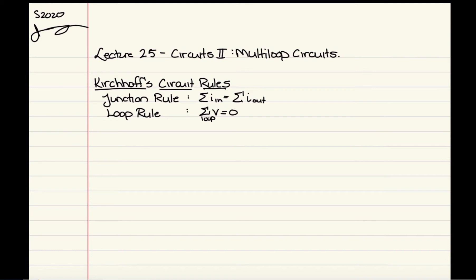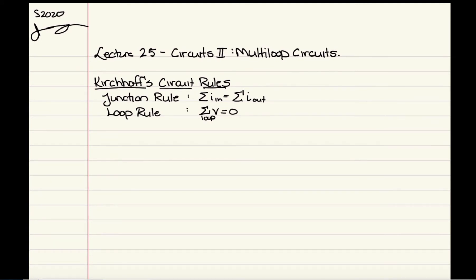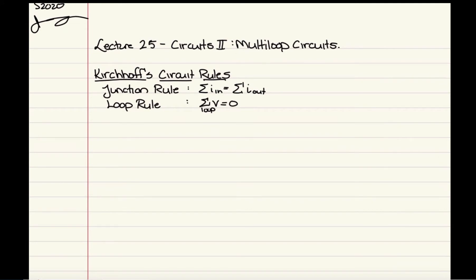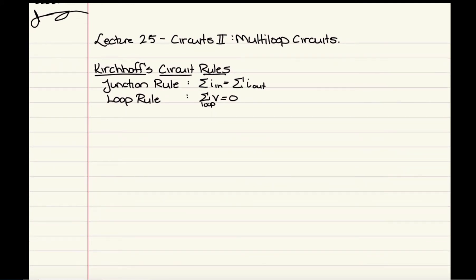Just a reminder of Kirchhoff's circuit rules: this all comes down to the junction rule, which says the current coming in must equal the current coming out, and the loop rule, which says there is no net potential difference across any loop you draw in a circuit. The junction rule is a statement of conservation of charge, and the loop rule is a statement of conservation of energy.